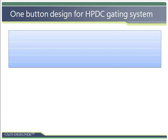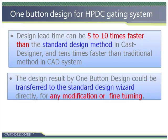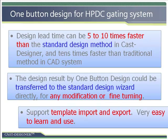With one-button gating system design, the design lead time can be 5 to 10 times faster than the standard design method in Cast Designer, and 10 times faster than the traditional method in a CAD system. Moreover, the design result from one-button design can be transferred to the standard design wizard directly, and the user can make any modification or fine-tuning if necessary.